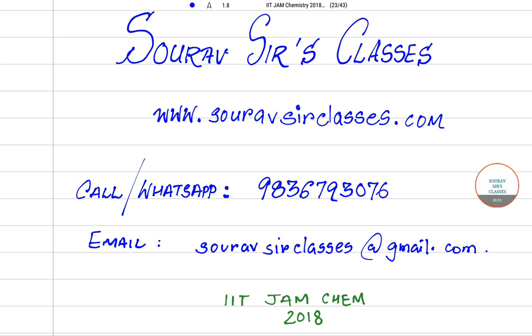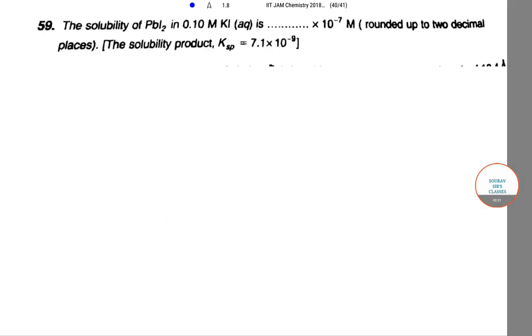Question number 59: The solubility of PbI2 in 0.10 molar KI aqueous solution. We have to find the solubility of PbI2 in 0.10 molar KI solution and round it up to two decimal places. The solubility product Ksp value is given as 7.1 × 10^-9.